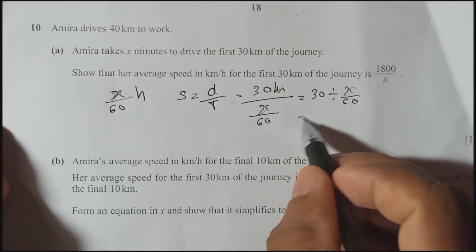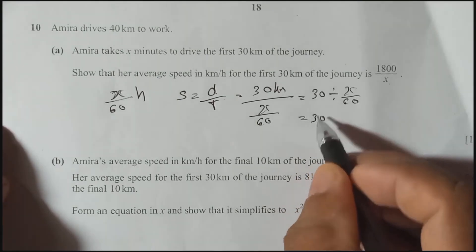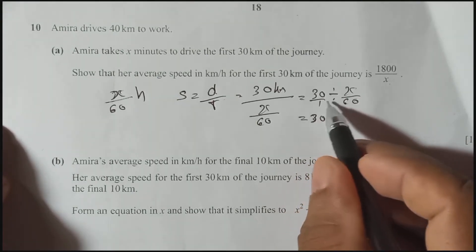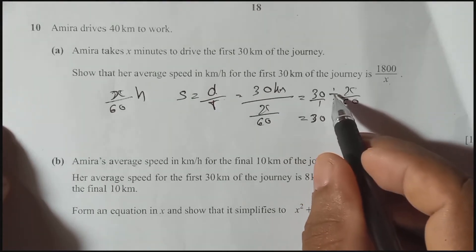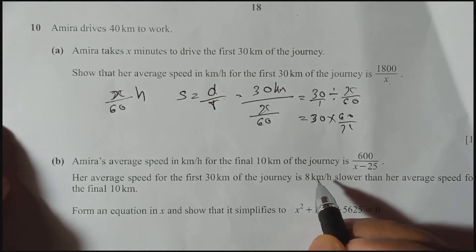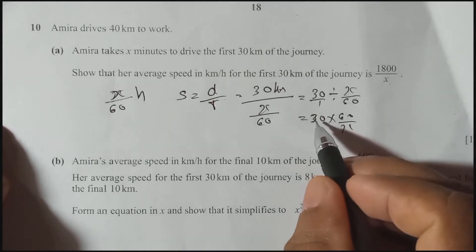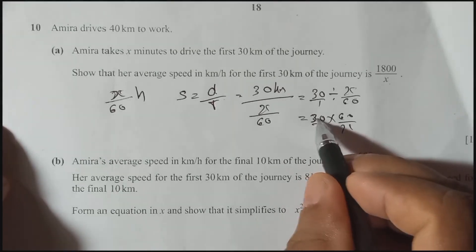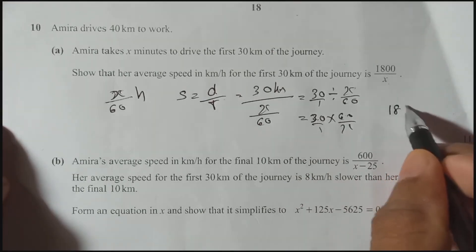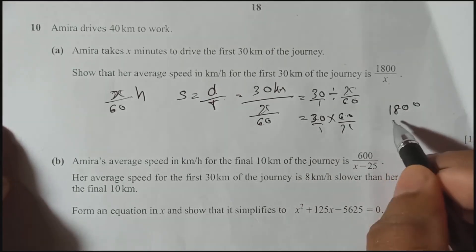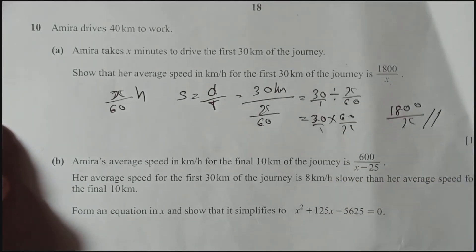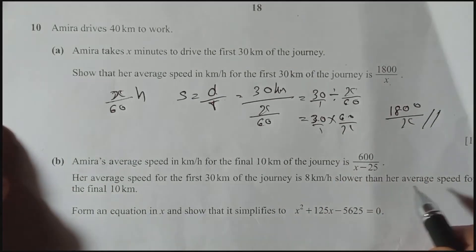We can write this as 30 divided by X/60. Thinking of it as a fraction divided by a fraction, we change the division sign to multiplication and take the reciprocal. So 30 times 60 gives 1800, divided by 1 times X gives X. The answer is 1800 over X.